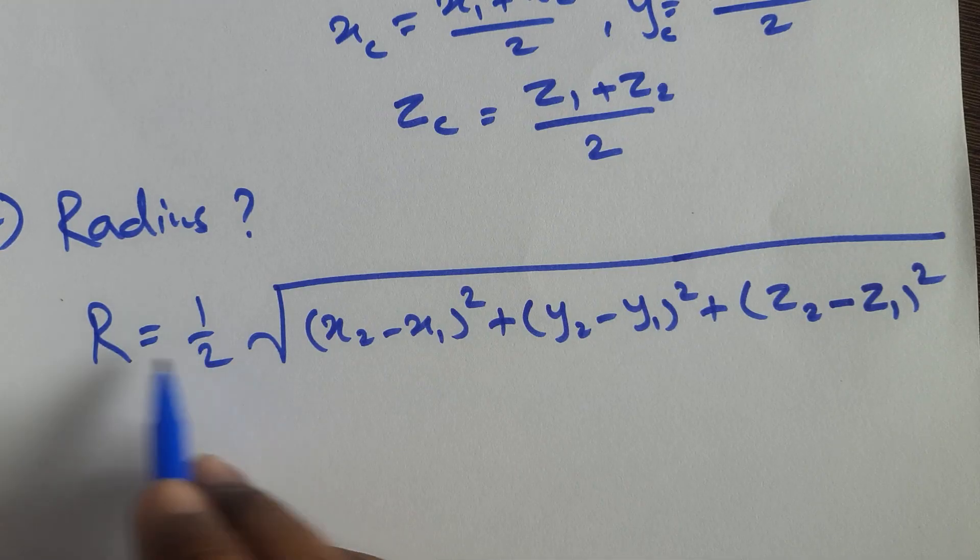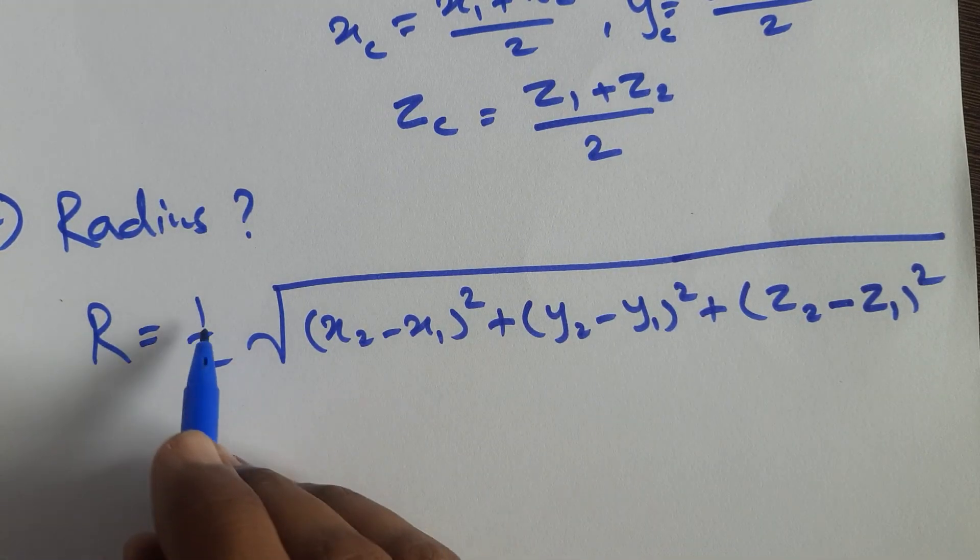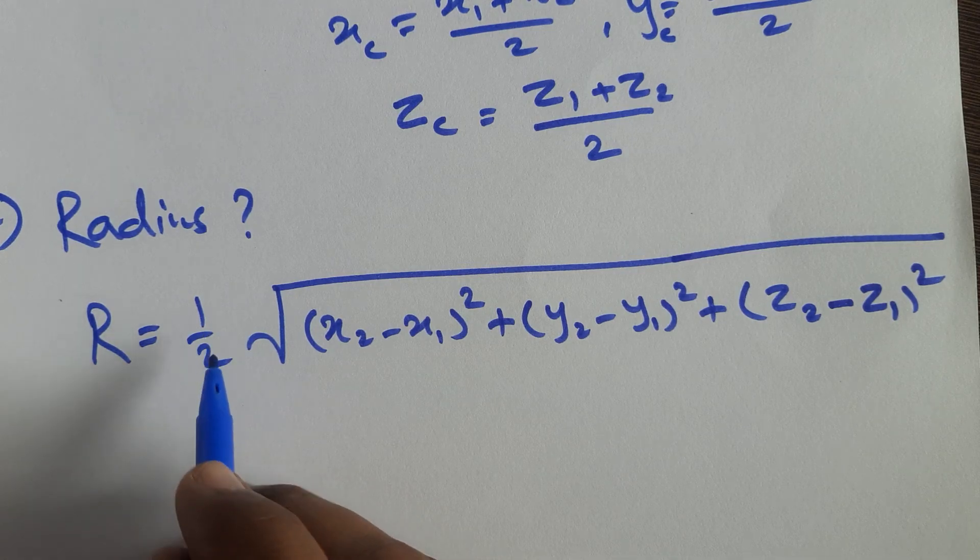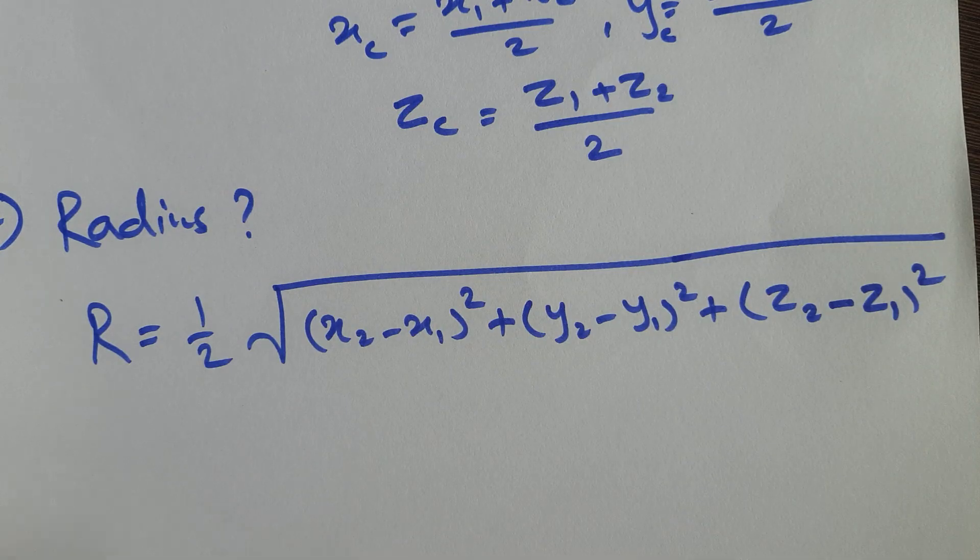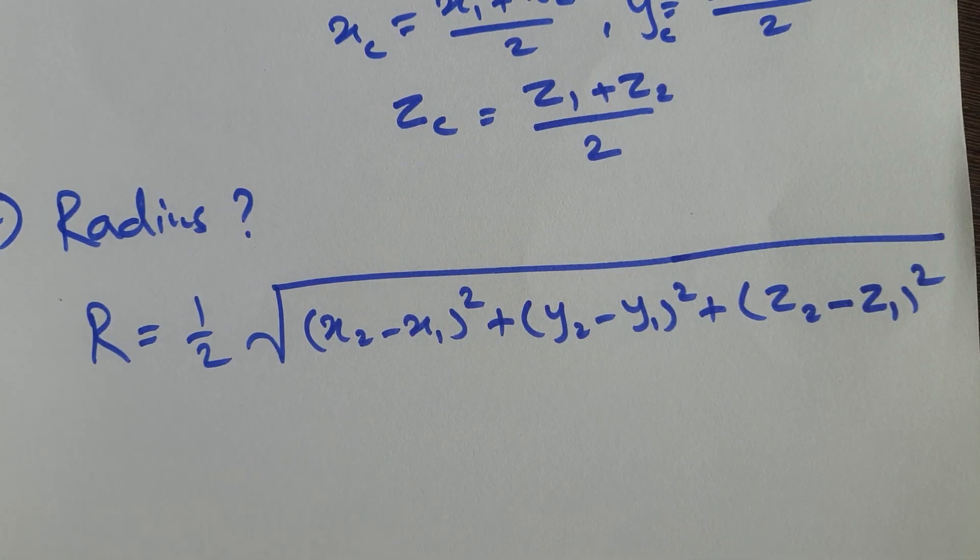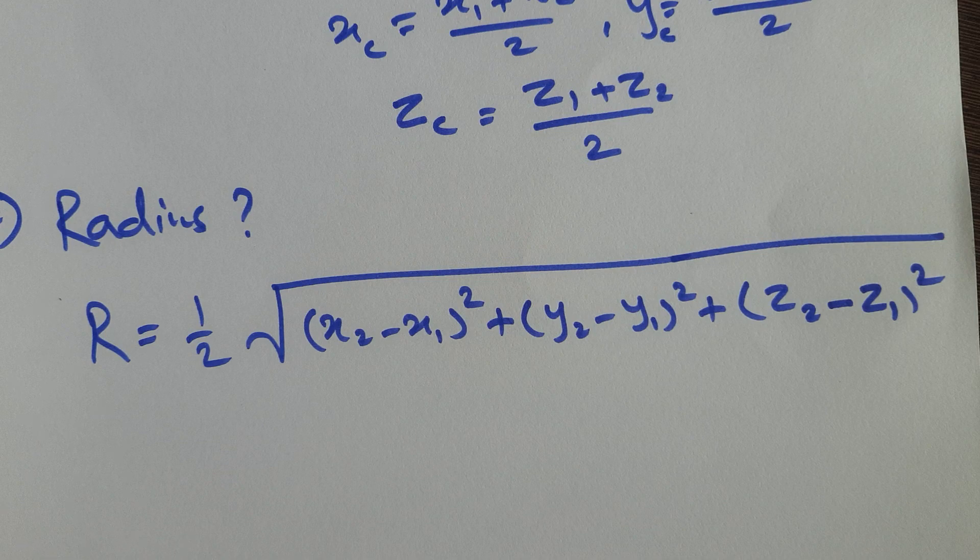Actually, if half is not there, it will become diameter. So this is the formula of diameter, but radius is diameter by 2, that's why we have written here half, 1 by 2 of this. So in this way you can find the radius and the center point of the circle if you know the diametral points. Thank you.